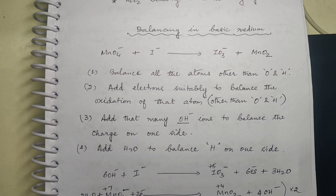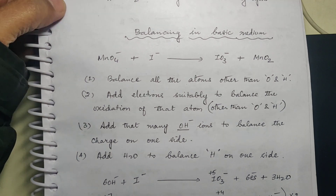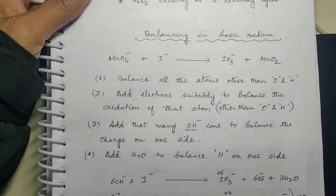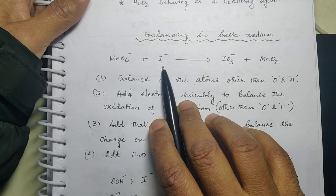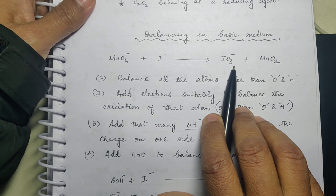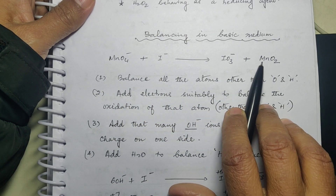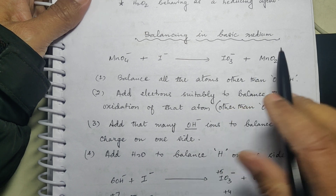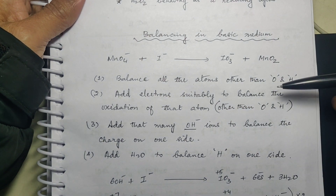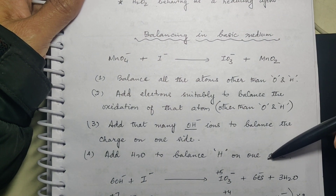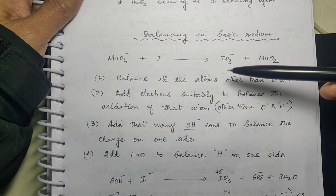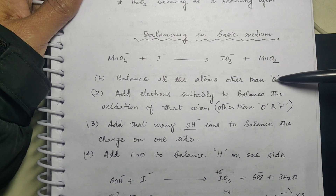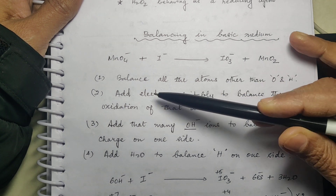Now let's come to the next topic: balancing in basic medium. I have taken a simple example: MnO₄⁻ + I⁻ giving IO₃⁻ and MnO₂. Just as in acidic medium I gave you four steps, in basic medium also there are four steps. The first step is the same — balance all the atoms other than oxygen and hydrogen.